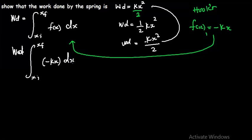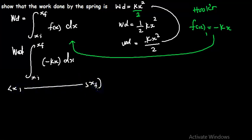The next thing we need to do is to integrate negative kx with respect to x from the initial displacement to the final displacement. This gives us the total work done by the spring as it undergoes displacement from position x of i to position x of f. After that, we evaluate the limits.